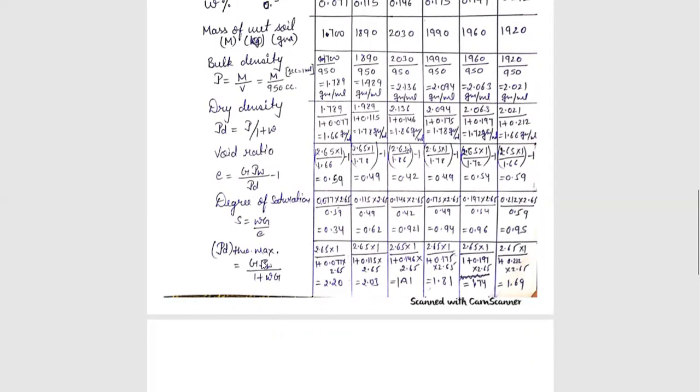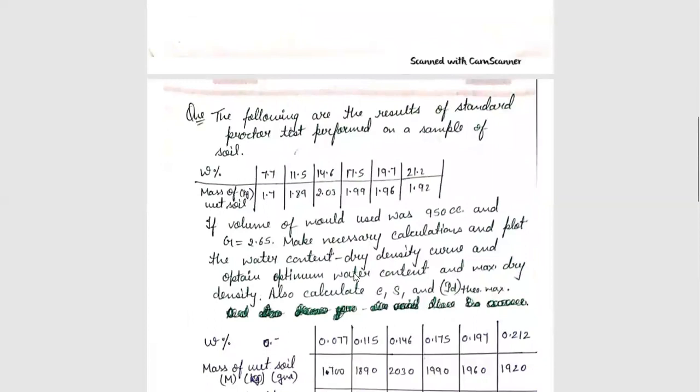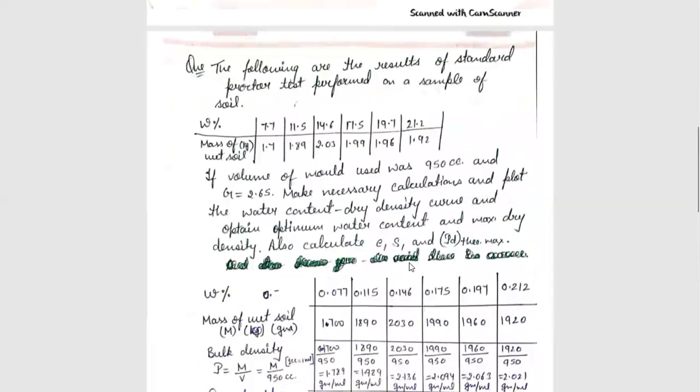All the values are here. Rho w also we have, 1 gram per ml. When we keep values here, theoretical maximum dry density will find out. Now, we have calculated E, S and rho d max. We have asked maximum dry density and optimum water content here.